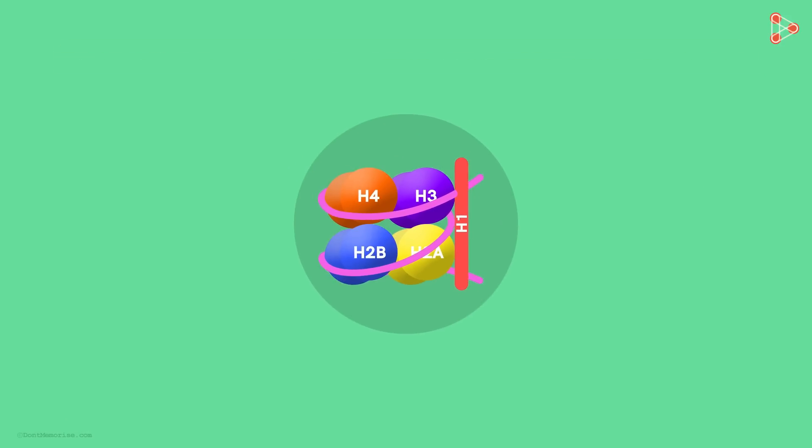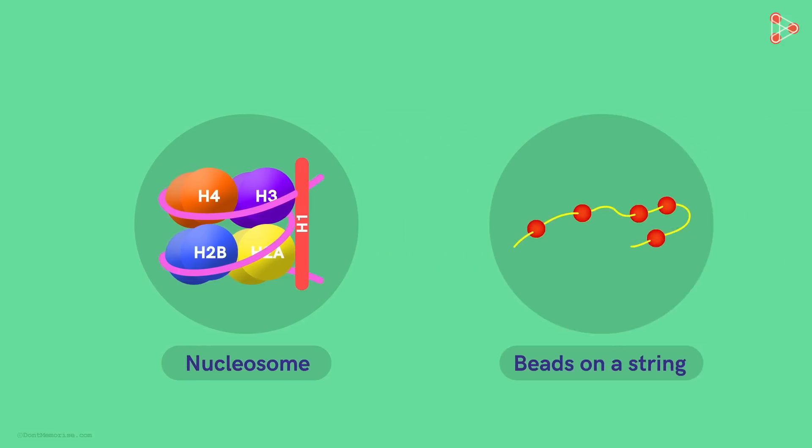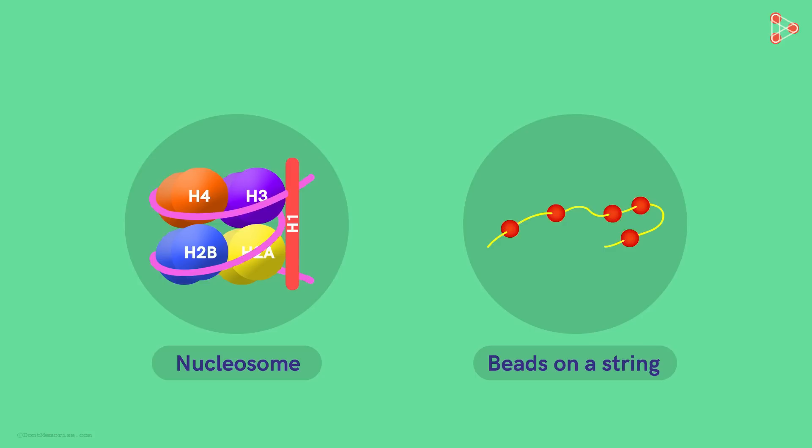This unit of the DNA string wrapped on the histone core is called Nucleosome! Does this structure resemble something? It does! It looks like a bead having a string wound around it! That is the reason why the Nucleosomes are referred to as the beads on a string structures!